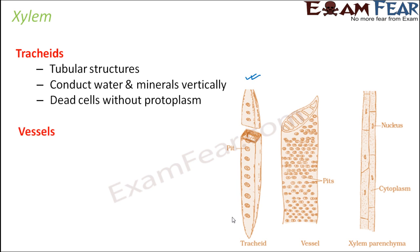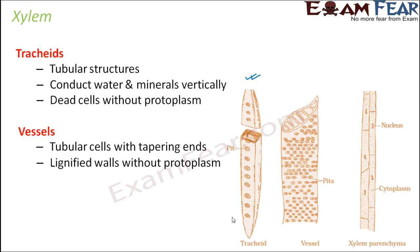The next element is vessels. They are also tubular cells with little tapering ends — the ends are not of the same thickness; towards the end it becomes a little tapering. Now, each vessel is made up of many cells, and each cell is known as a vessel member. So many vessel members together form one vessel. They also do not have protoplasm, so they are also dead cells.